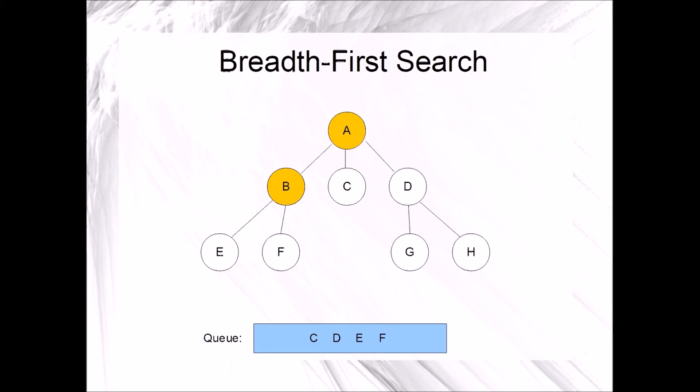Since the queue is not empty, we will have another repetition. Our repetition will begin by dequeuing C and marking it. Next, we enqueue all adjacent unmarked vertices. There are none. This ends the repetition.